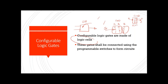In FPGA, we do not have fixed gates — we have lookup tables where we configure that particular memory to act like a particular gate. That's why we call it 'configuration.' These gates are connected using programmable switches. Millions of such gates exist and they are connected to each other based on the Verilog code you write, creating a complete circuit.